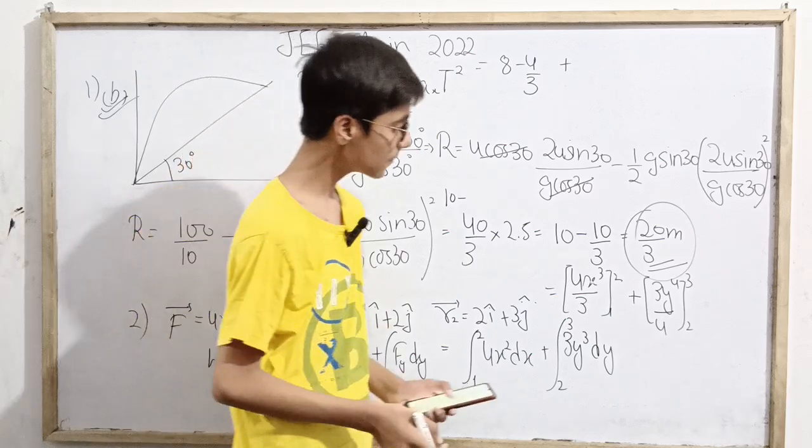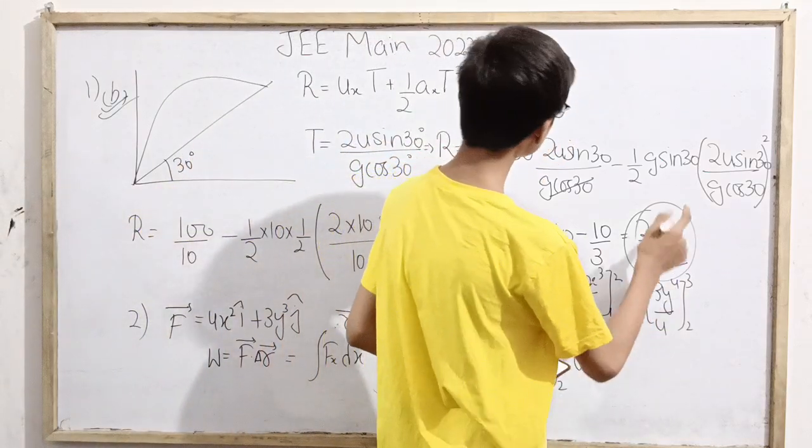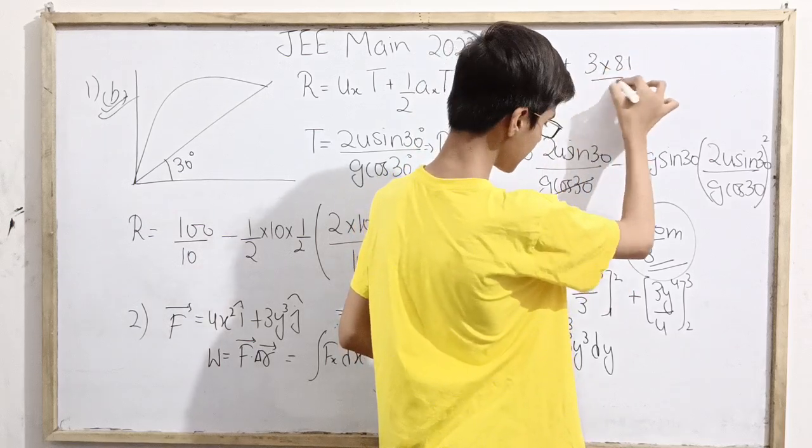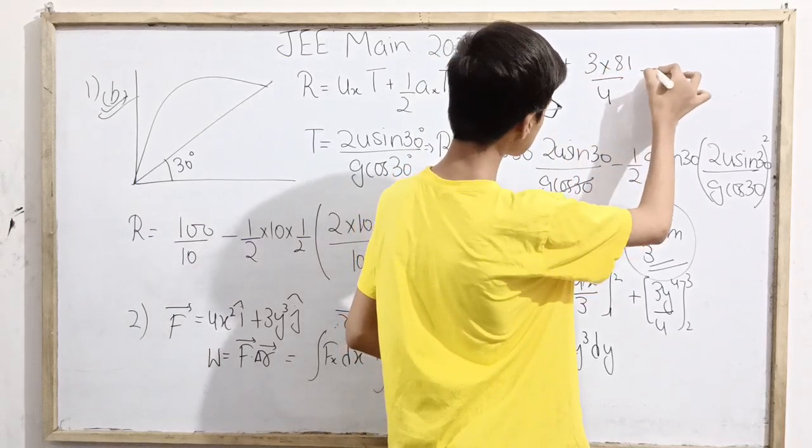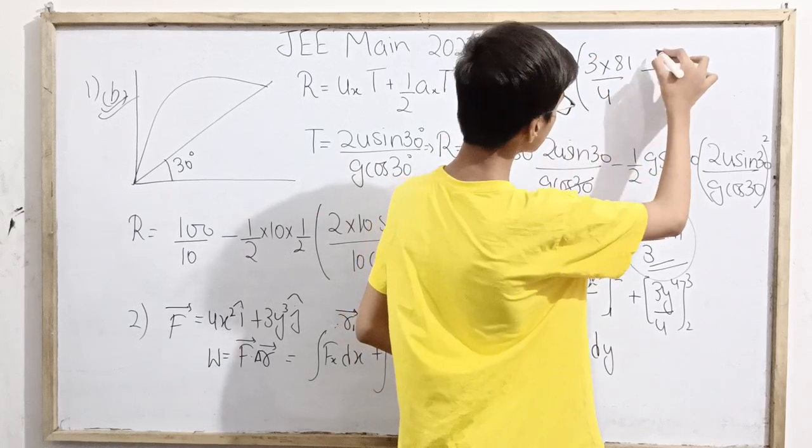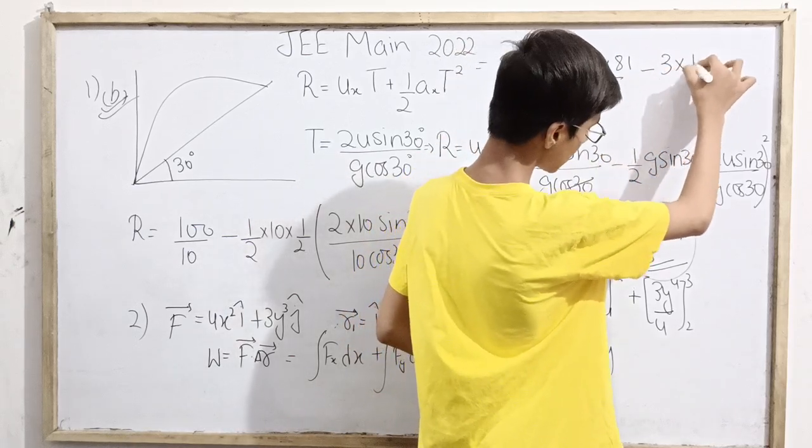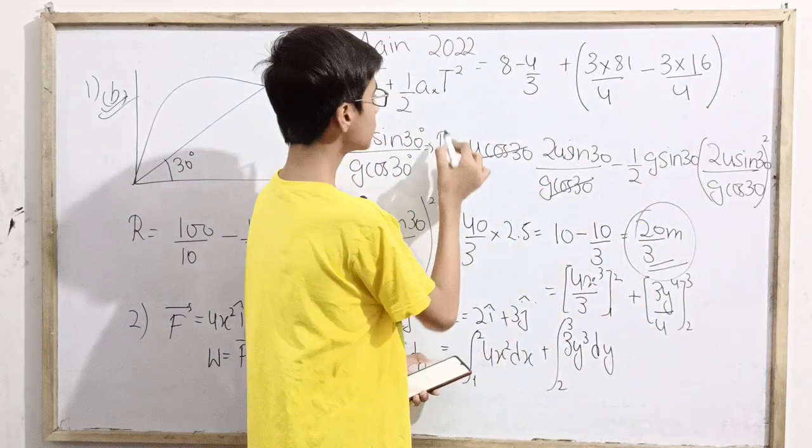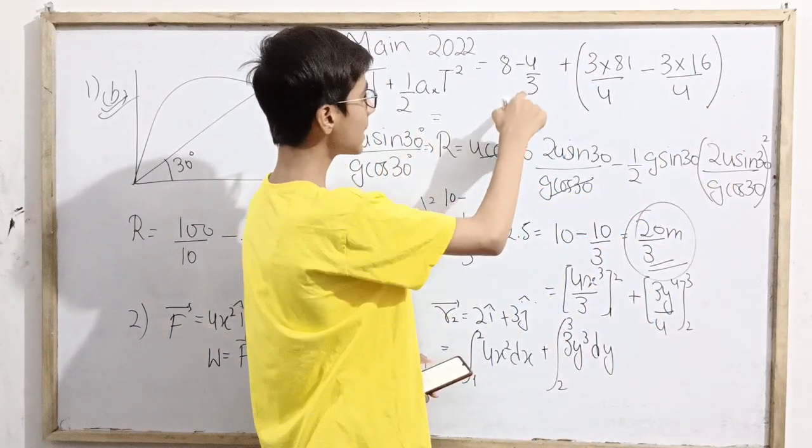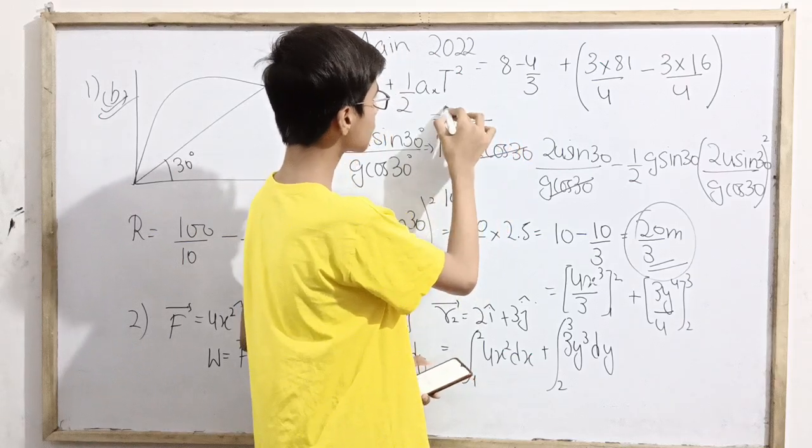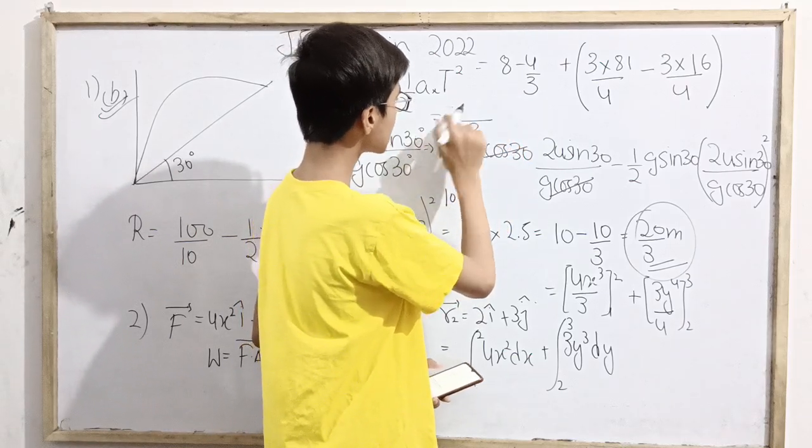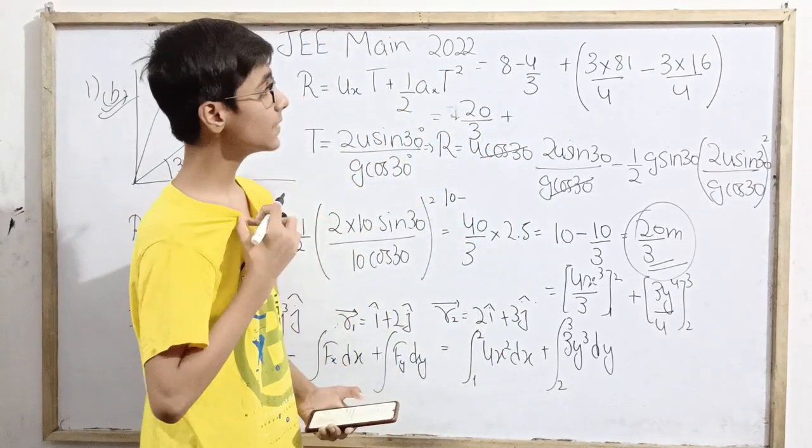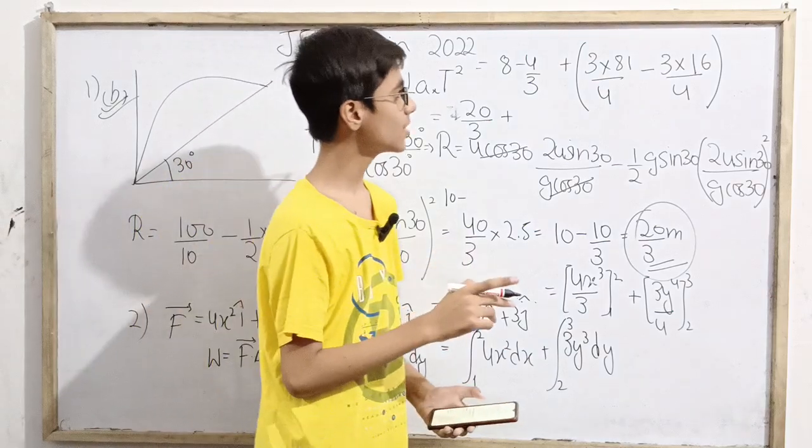Then plus 3y to the power 4 by 4. First put 3, so that's 3 to the power 4, which is 3 times 3 times 3 times 3 equals 81. Here's 3 into 81 divided by 4, minus 3 into 2 to the power 4, which is 16 over 4.